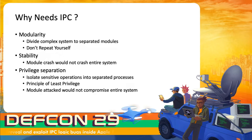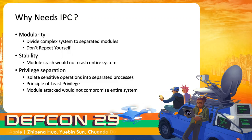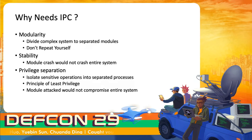Third, privilege separation. With IPC, developers not just separate functionality but also separate privilege. Isolating sensitive operations into separated processes and giving them the least privilege means that even if part of the system is hacked, it would not compromise the entire system, increasing security and protection from attacks.